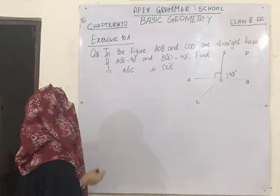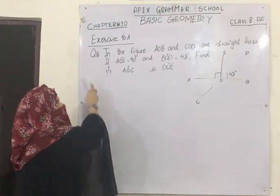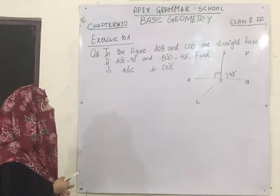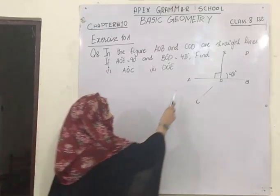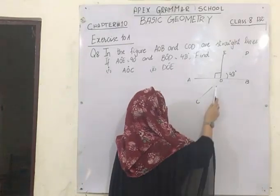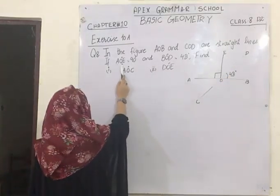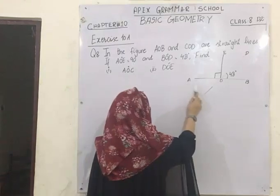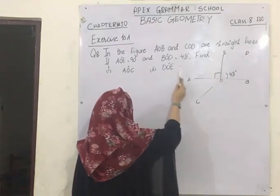In question number 8, you are given a figure in which AOB and COD are straight lines. The angle AOE is 90 degrees, as shown by the block symbol in the diagram, and the angle BOD is 48 degrees.